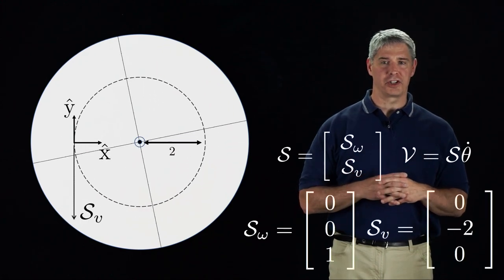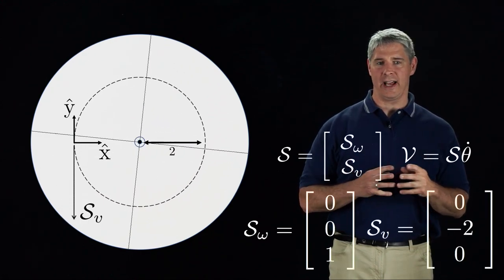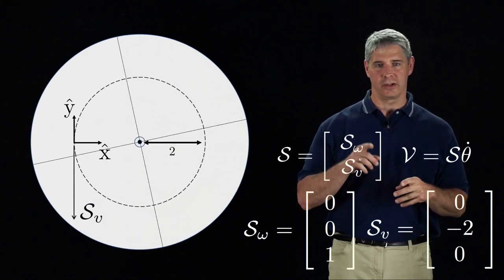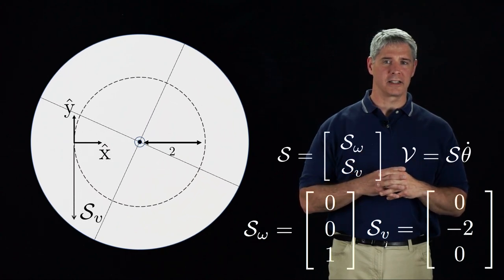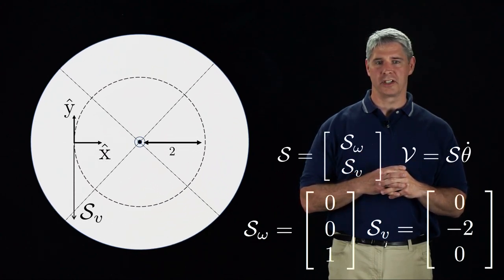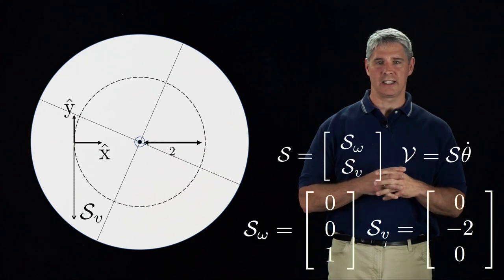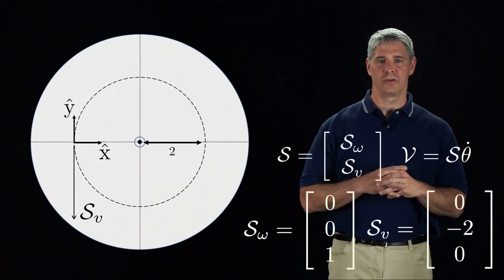Defining a reference frame as shown, we see that the angular velocity S omega is 1 about the z-axis, which is also out of the screen. Since the reference frame is two units from the screw axis, the linear velocity at the frame origin is two units in the minus-y direction, so we get Sv equal to 0 minus 2, 0.